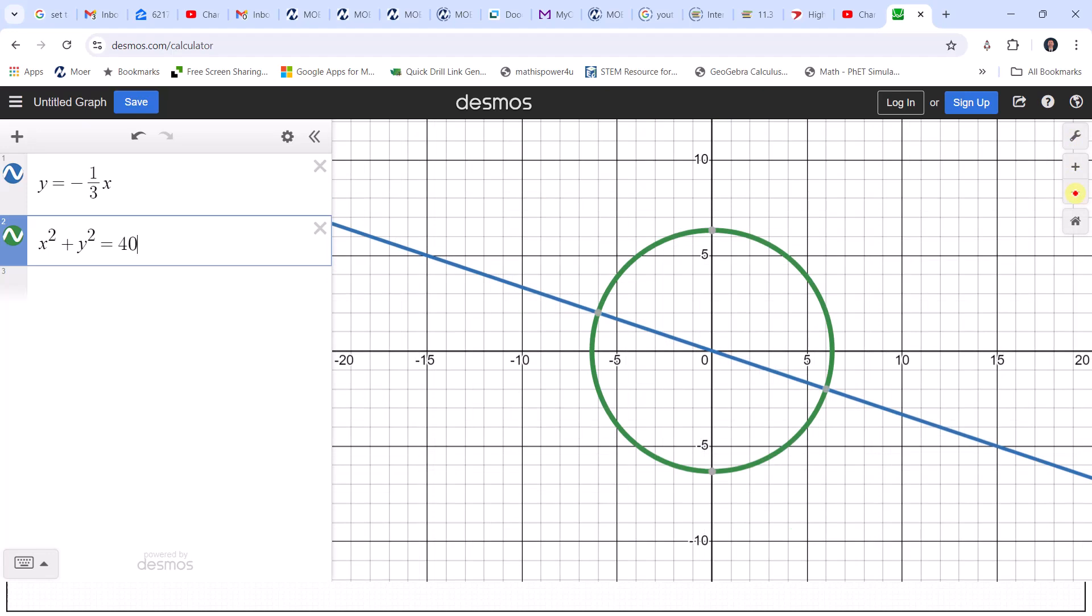and we can see the intersection points of the line and circle. There are two points of intersection which indicates there are two solutions. One solution is the ordered pair negative six comma two. The second solution is the ordered pair six comma negative two.